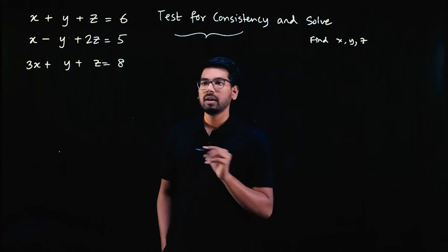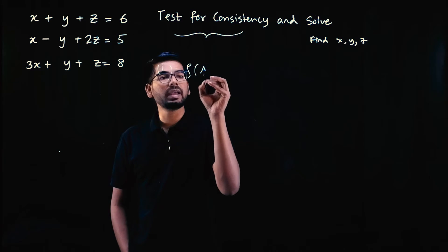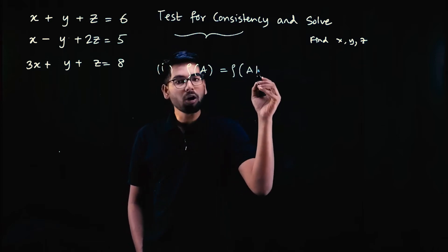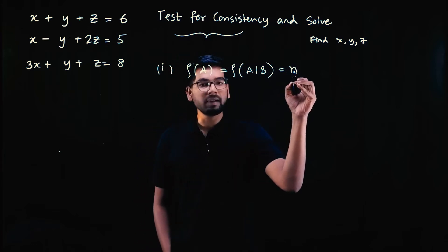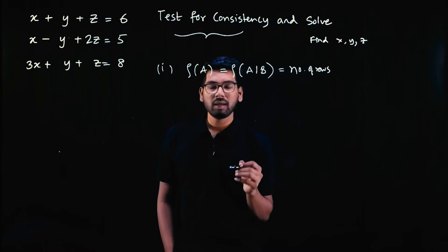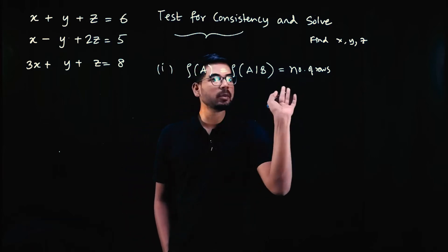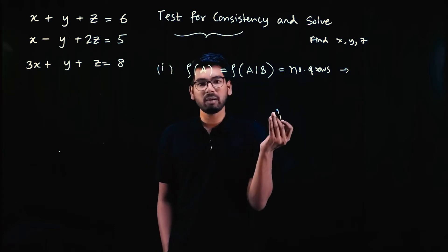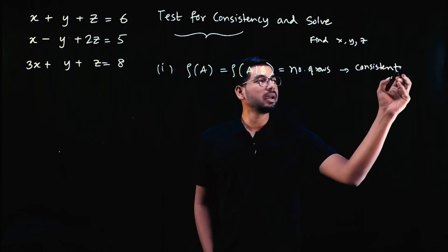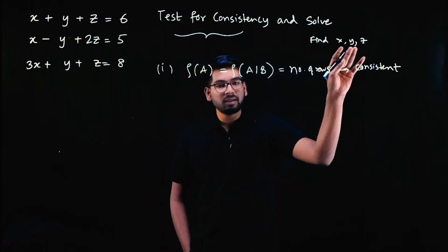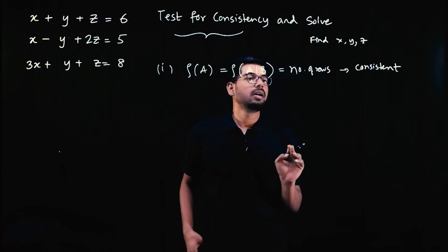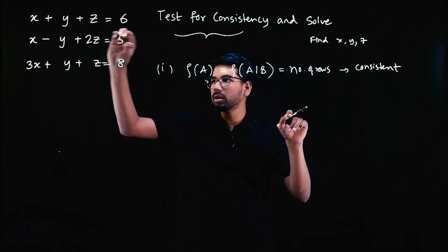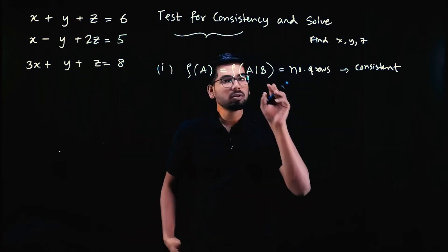For testing consistency, there are conditions. First condition: if rank of matrix A equals rank of augmented matrix AB, and both equal N (the number of unknowns/rows), then the system is consistent with a unique solution — there is exactly one set of X, Y, Z values satisfying all equations. Second condition: if rank of A equals rank of AB but both are less than the number of equations, then the system is consistent with infinitely many solutions.